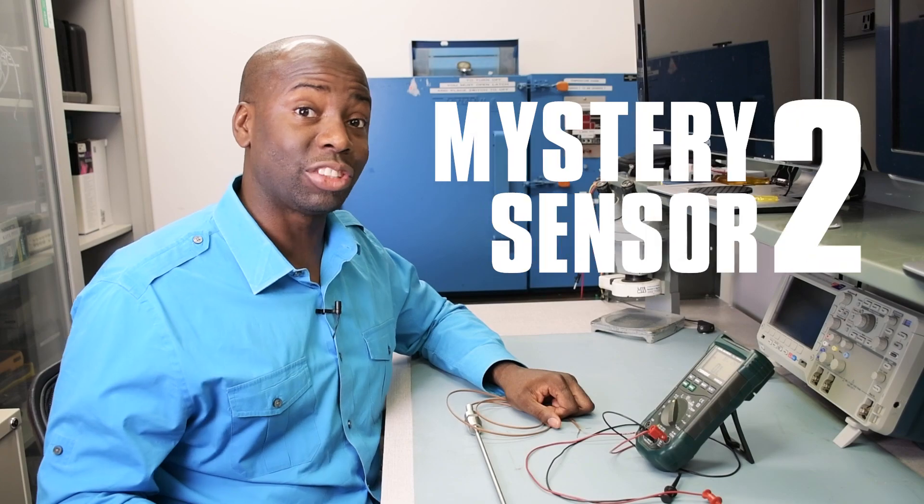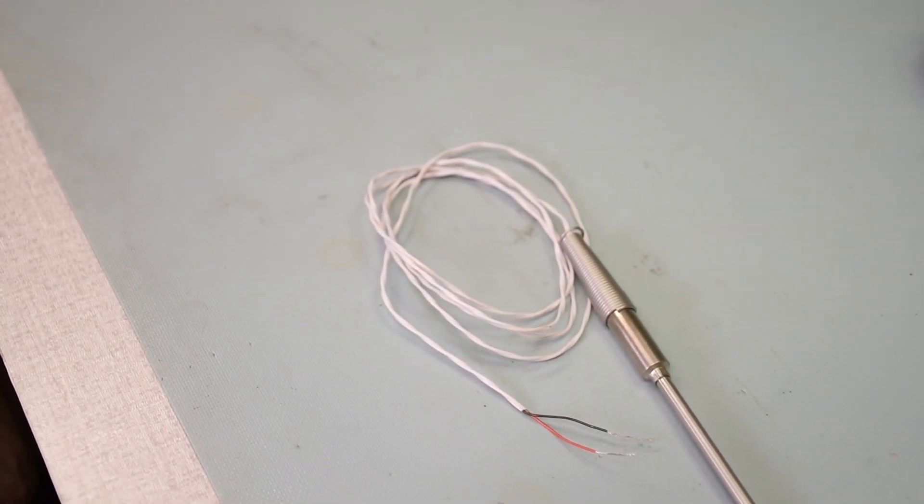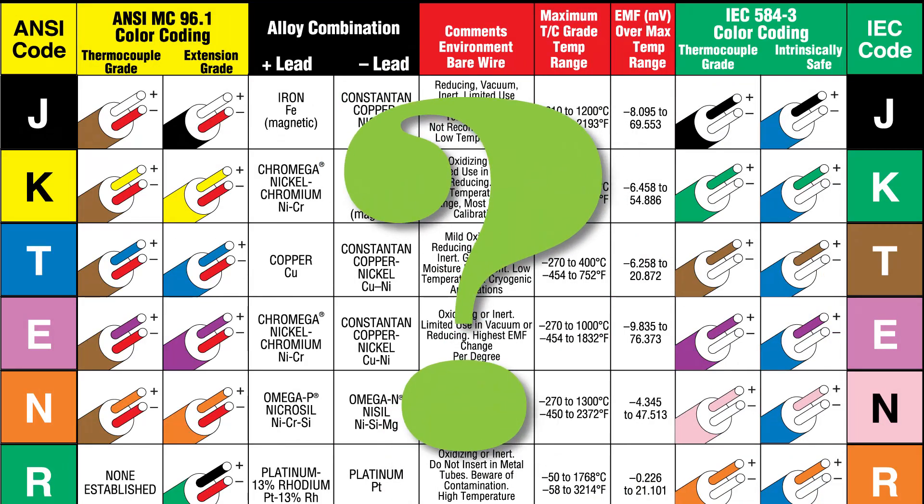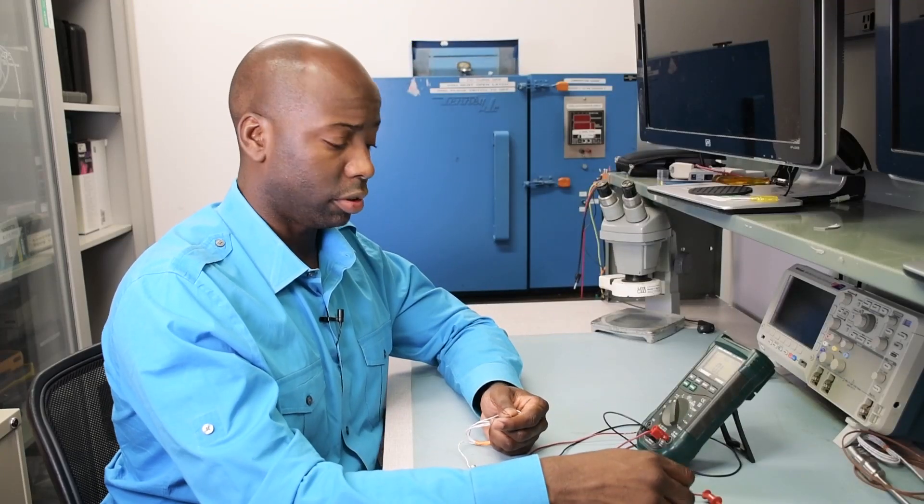And now, let's move on to mystery sensor number two. It has a metal sheath, a cable, and has a two-wire construction, one with a black insulation and one with a red insulation. It doesn't seem to match up with anything on a thermocouple chart, so let's dig a little deeper.